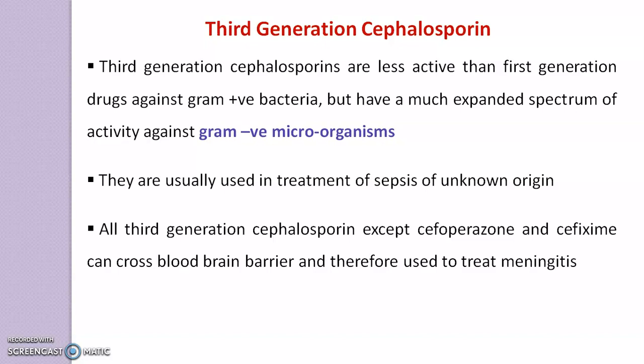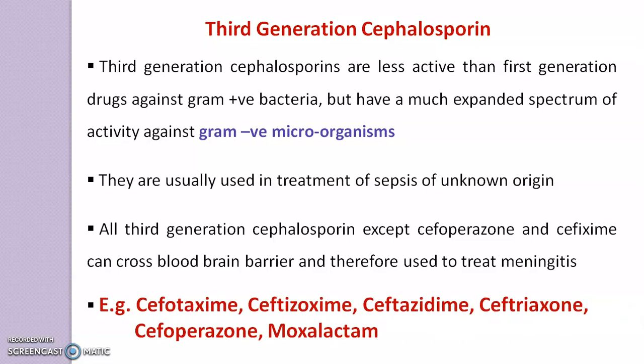All 3rd generation cephalosporins except Cefoperazone and Cefixime can cross the blood-brain barrier and are therefore used to treat meningitis. Examples include Cefotaxime, Cefixime, Ceftazidime, Ceftriaxone, Cefoperazone, and Moxalactam. They start with CEF but end with IME or ONE. The exception is Moxalactam, which starts with M.